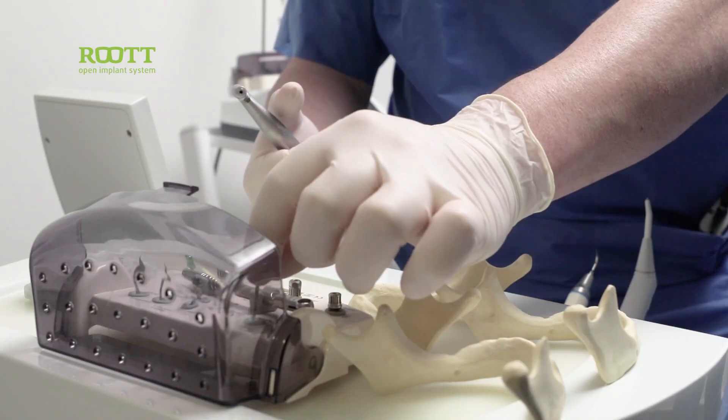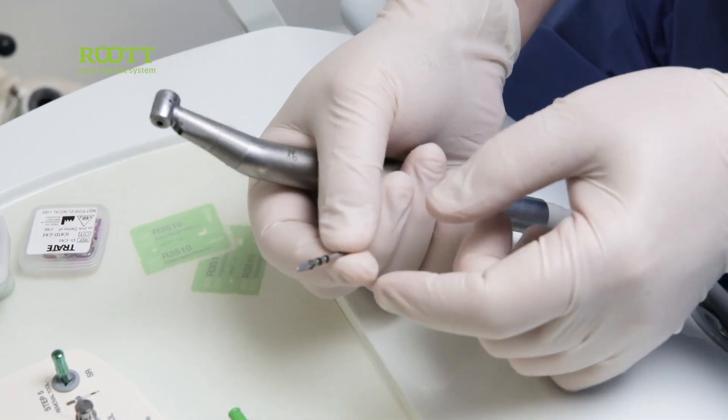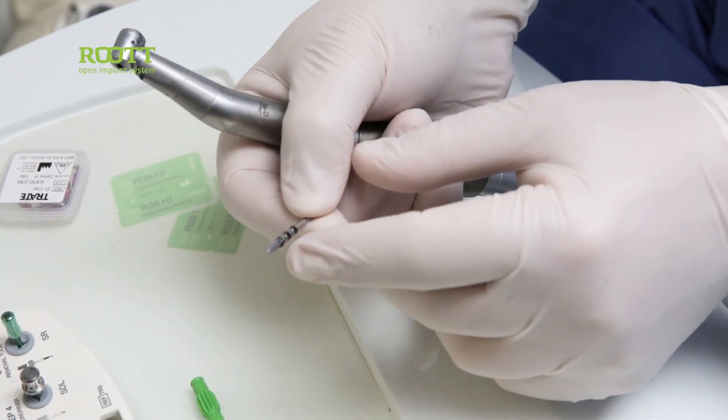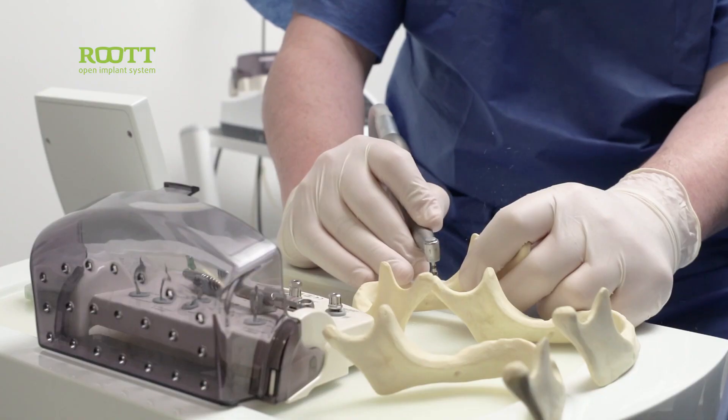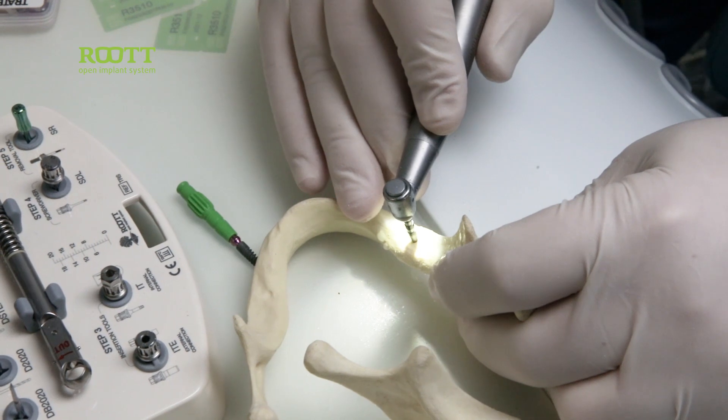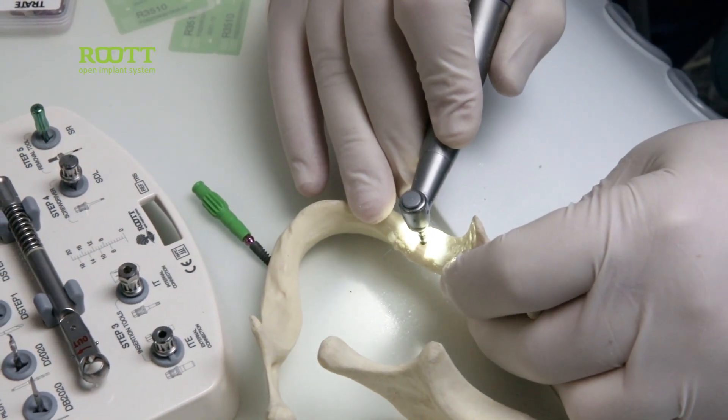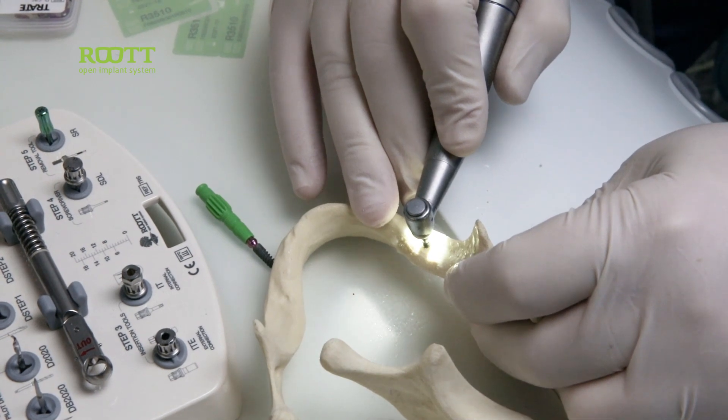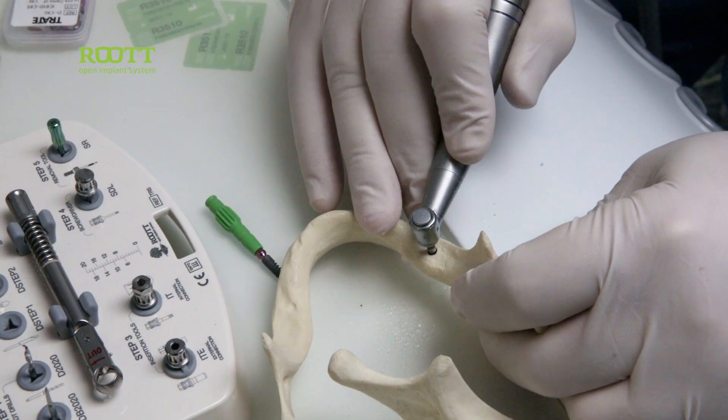Then we use the D-step one, which has laser marks, also 6, 8, 10, and 12. And we go out.